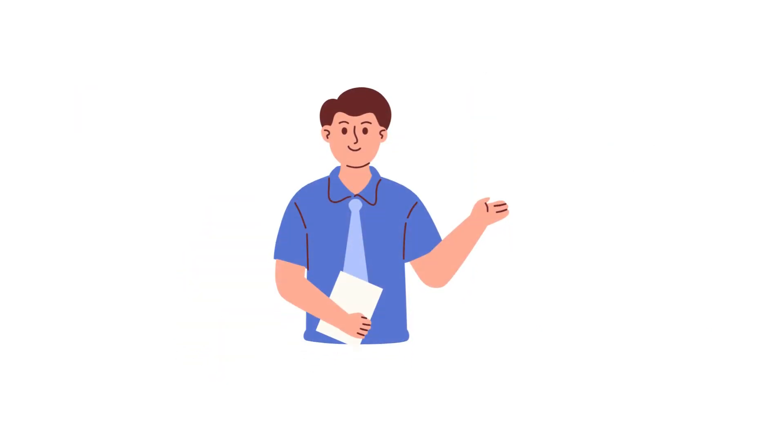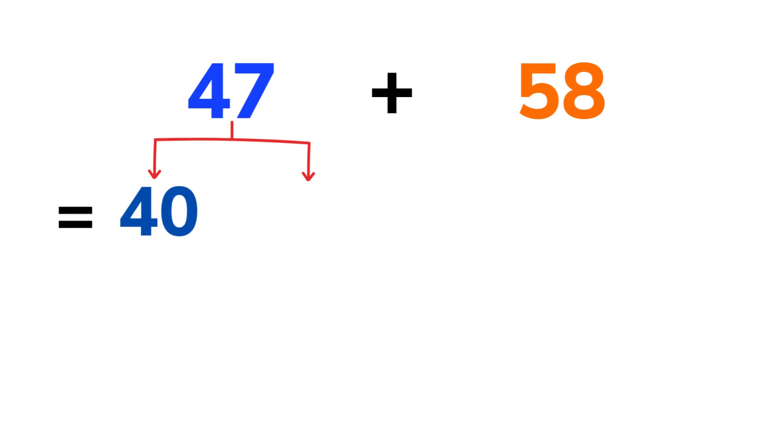Let's start with something simple. 47 plus 58. First, we break each number into tens and ones. 47 is made of 40 tens and 7 ones. 58 is made of 50 tens and 8 ones.